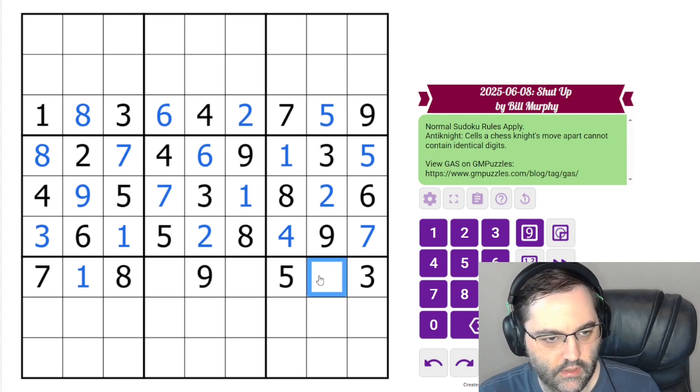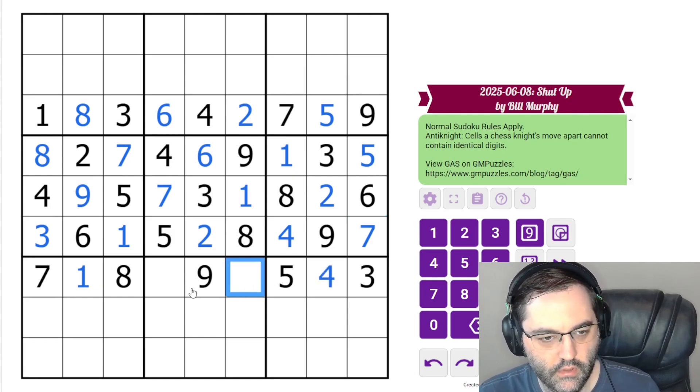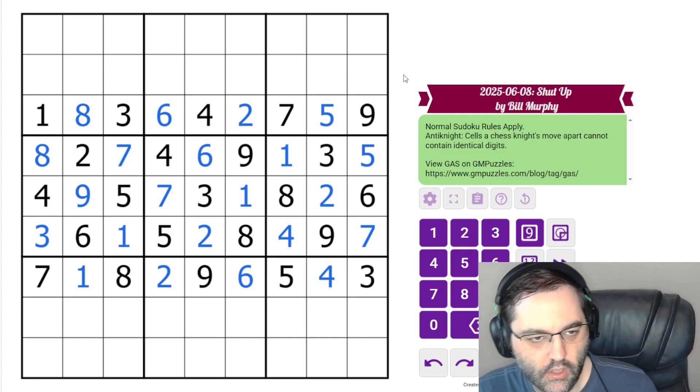Anytime you have two dominoes separated by a column or a row like this, those four cells must contain distinct digits. You can actually do even better if you're going across boxes like this in the same band or in the same stack. All six of these see each other. But two can only go in this cell in the row. This can't be five, so we've resolved that row.